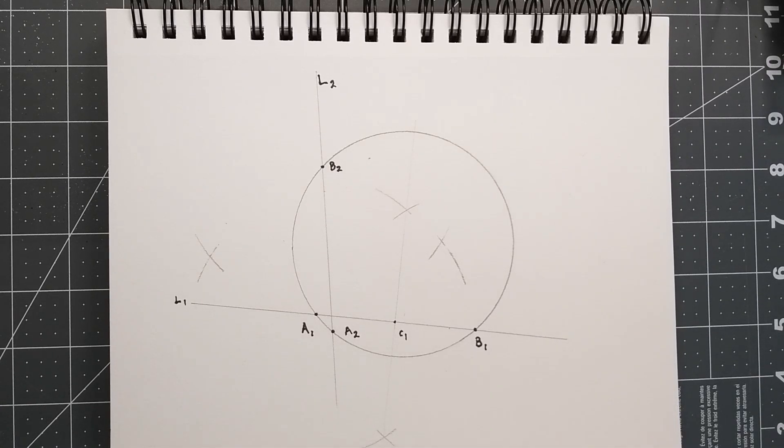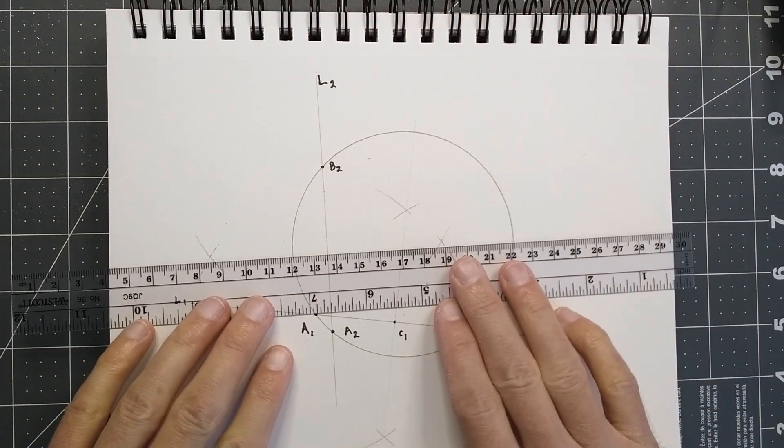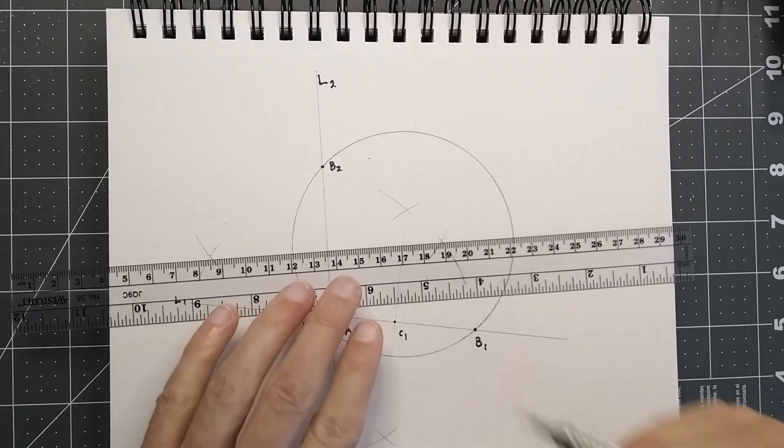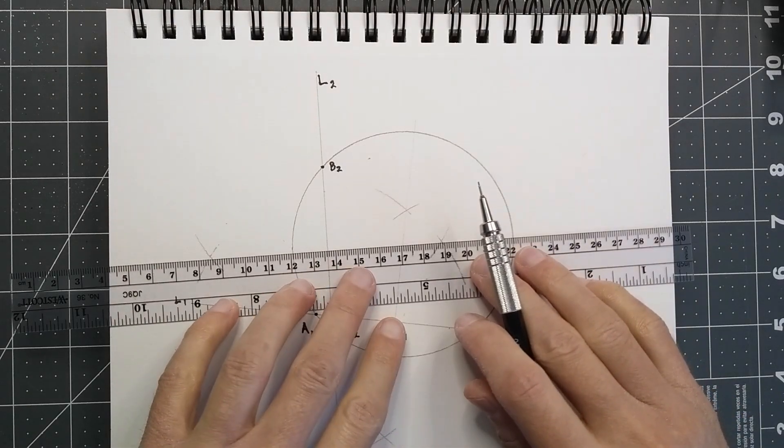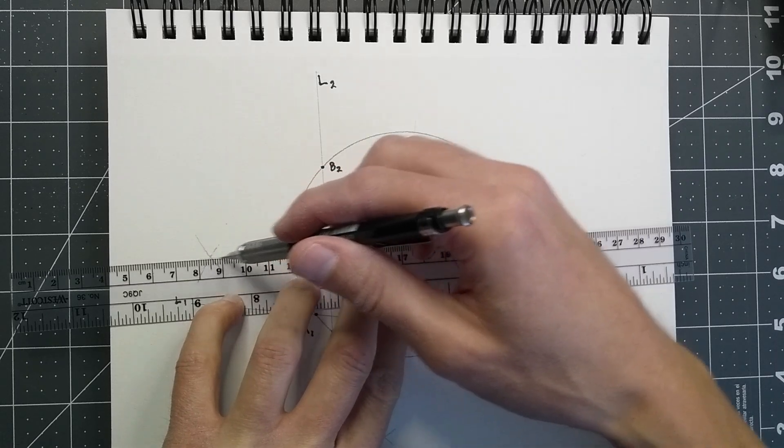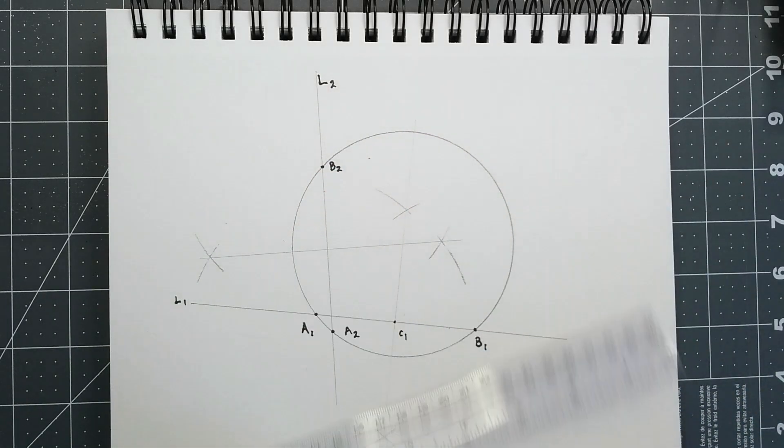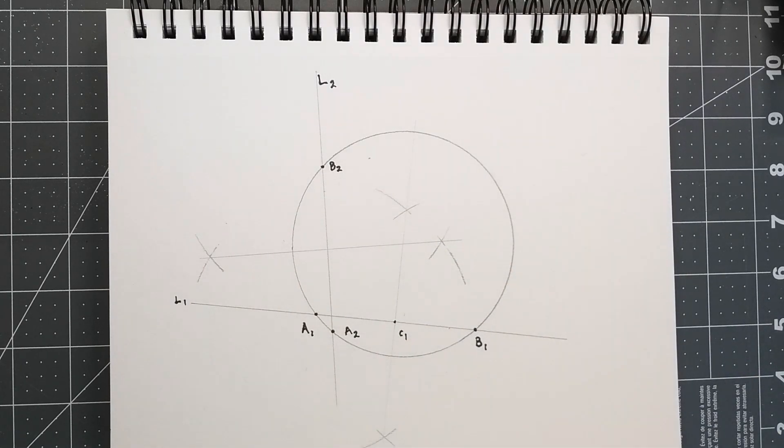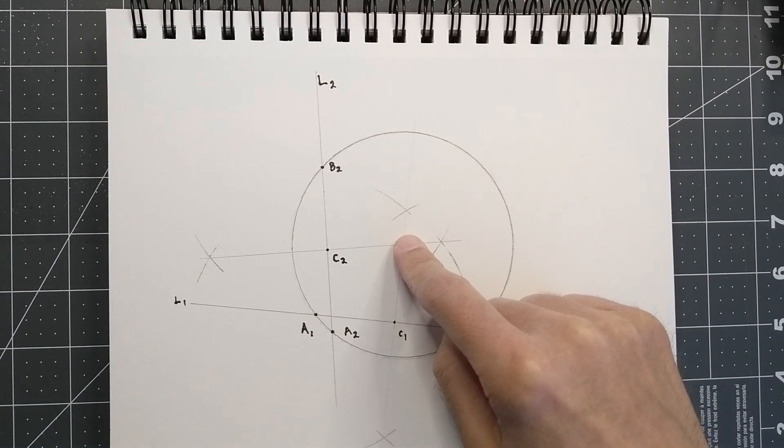So now we can cross these two lines. And it crosses L2 right there. We now have our second center point. And these two points aim towards the exact center of the circle.